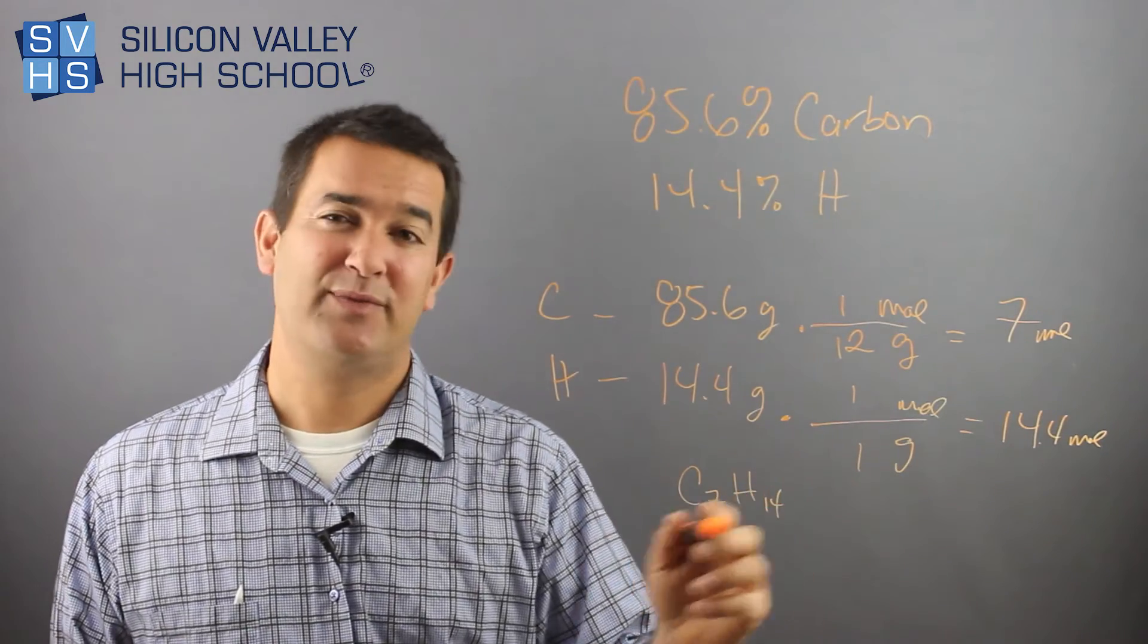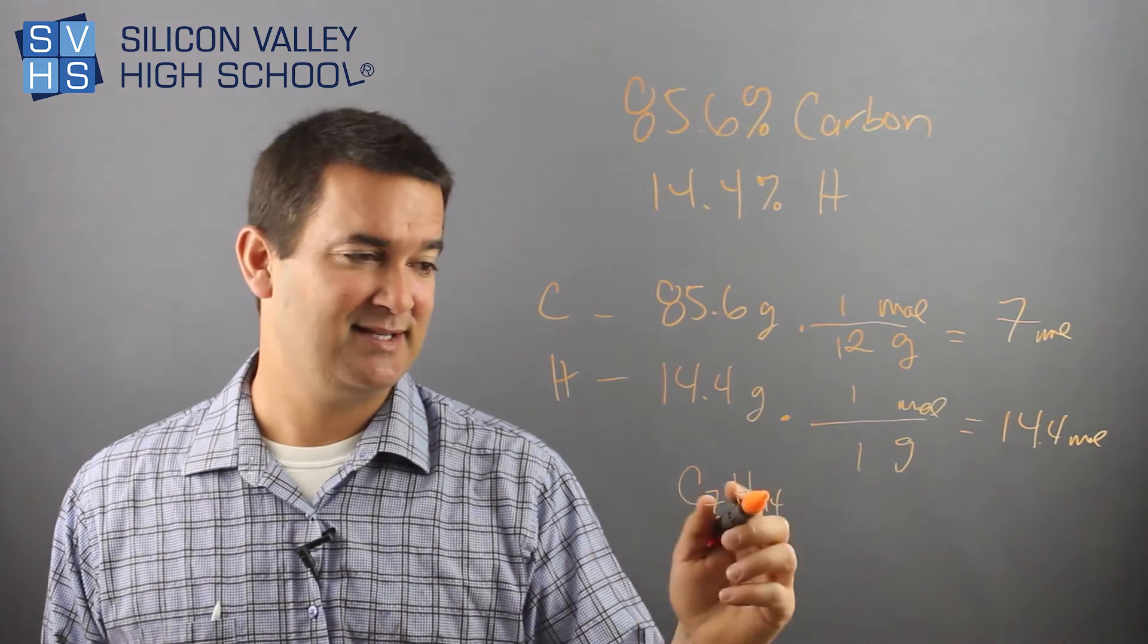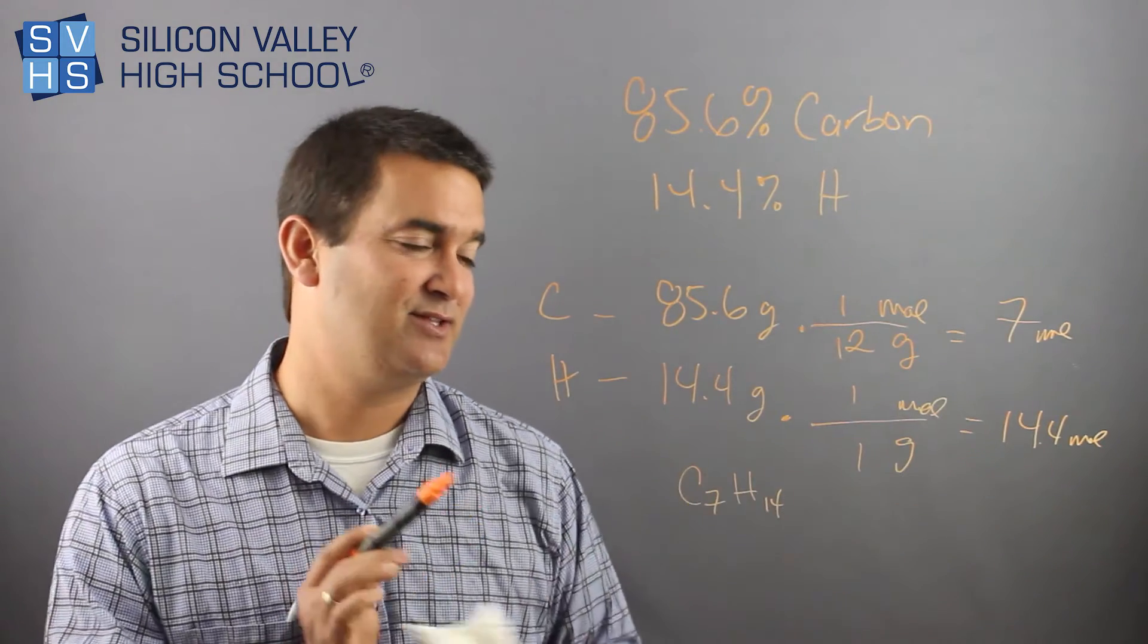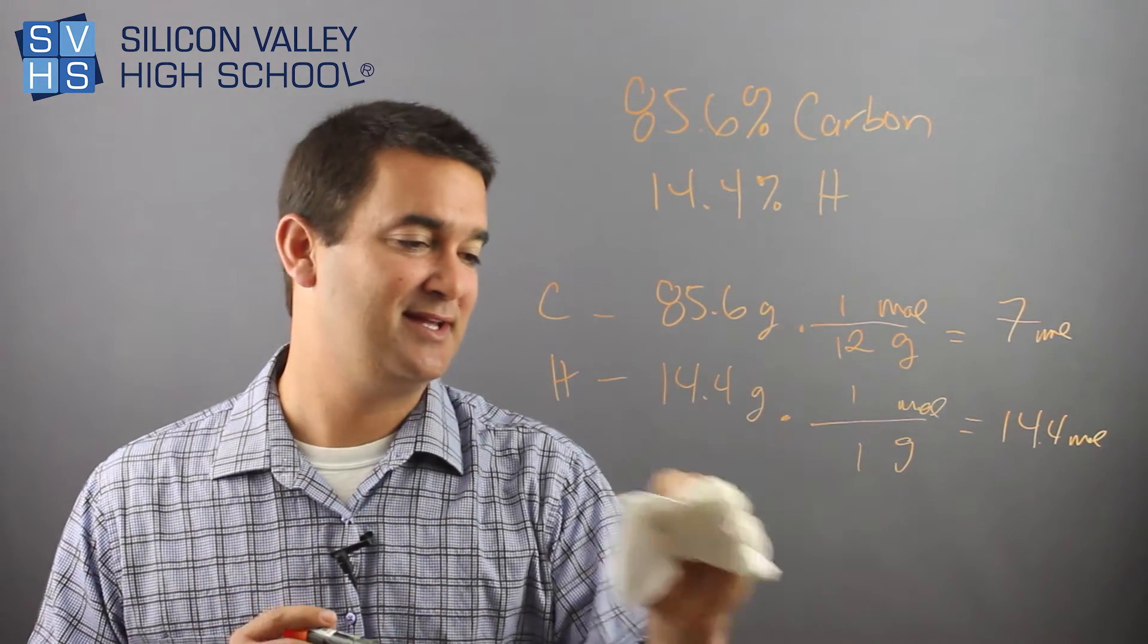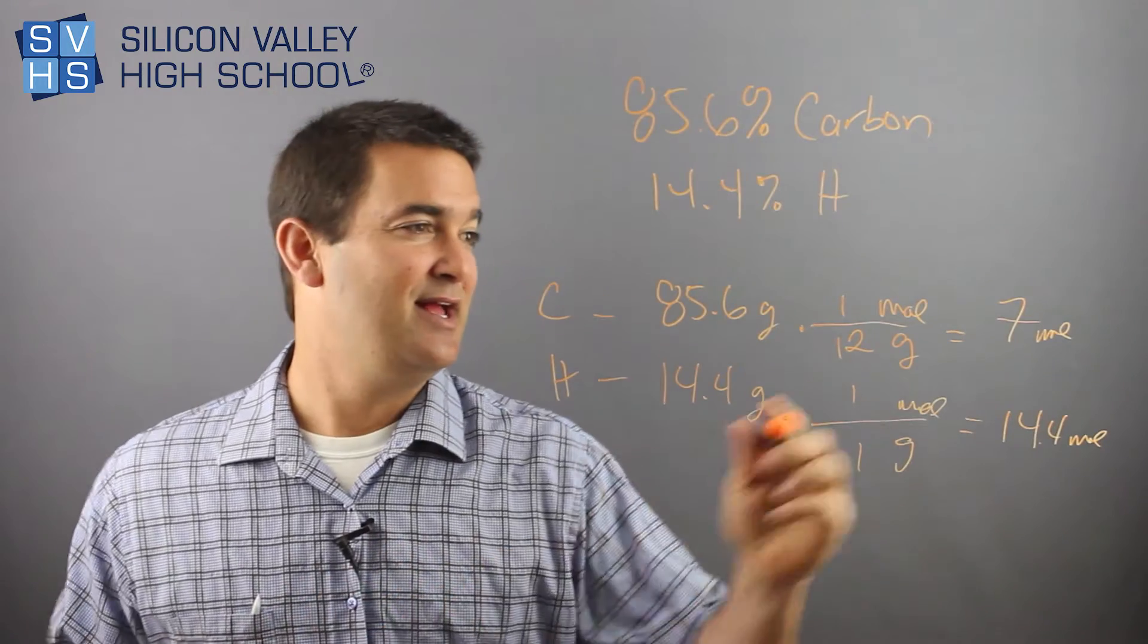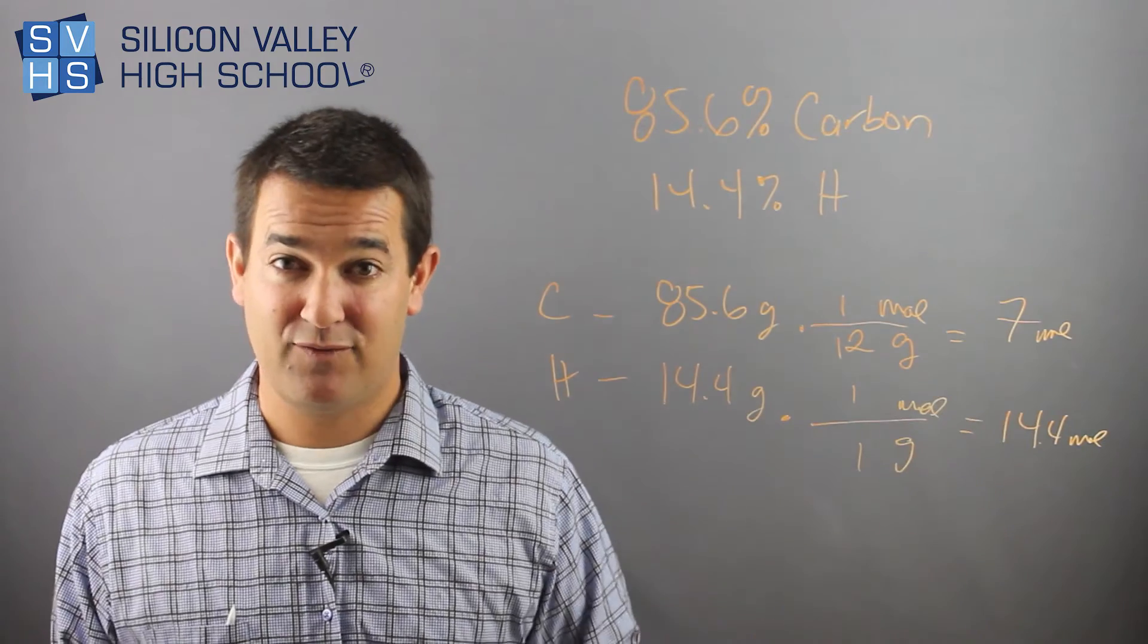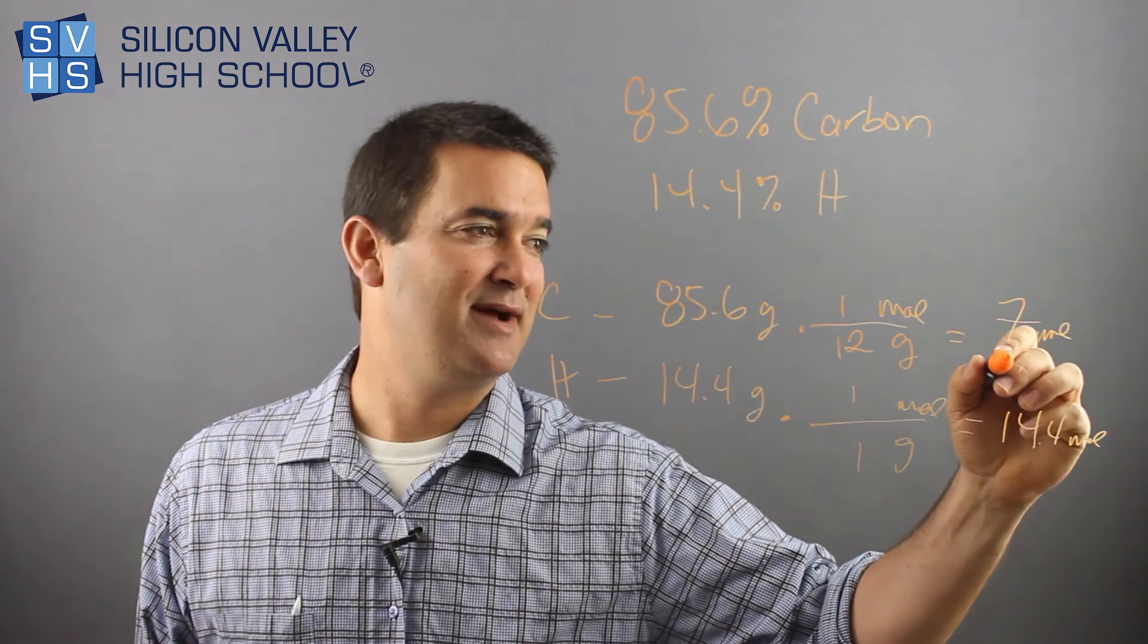That's the hard part is you do kind of have to round, but this isn't the reduced version, right? This is not the empirical formula. I have seven C's and 14 H's. The way to do the reduced version of this is you divide both by the smallest guy. Is seven the smallest guy or 14.4? Obviously seven.